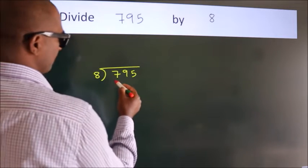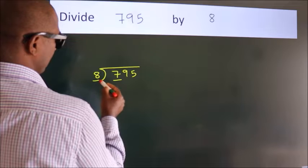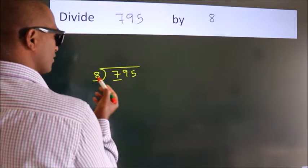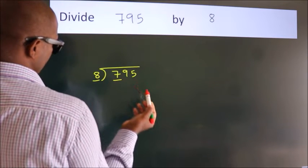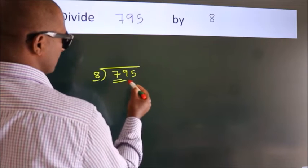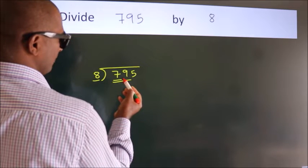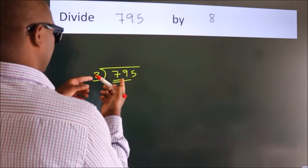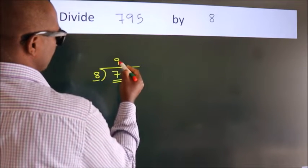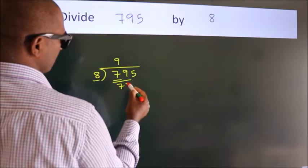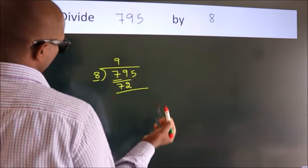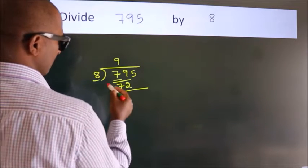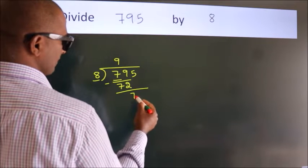Here we have 7. Here 8. 7 smaller than 8. So we should take two numbers. 79. A number close to 79 in 8 table is 8 nines, 72. Now we should subtract. We get 7.